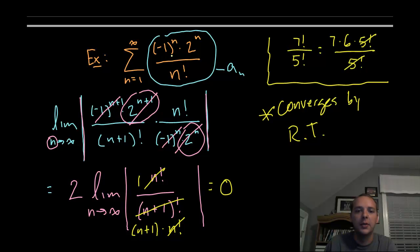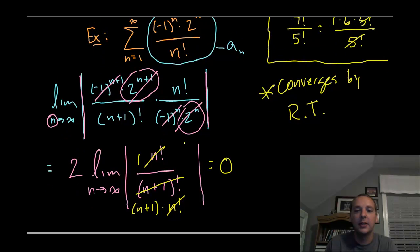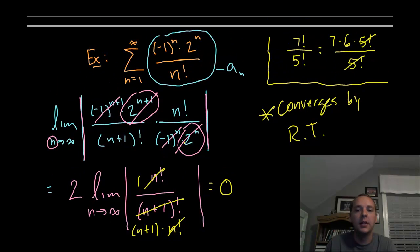It converges by the ratio test. And that's really all there is to it. So it's extremely easy to use. The algebra usually simplifies pretty easily. And as long as that's less than 1, it converges. And if it was greater than 1, we would say it diverges. And just perchance if it happened to be 1, we would have had to go on to another test, like maybe alternating series test or one of your other tests.